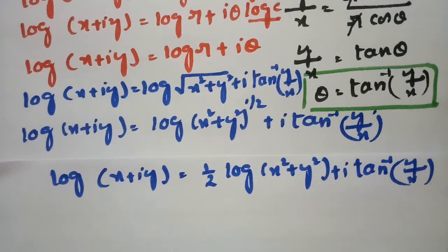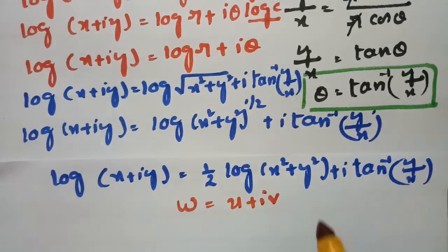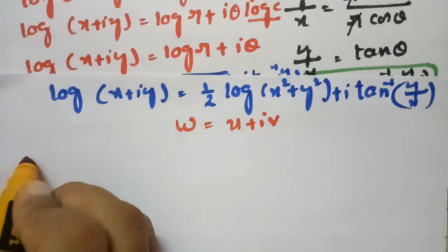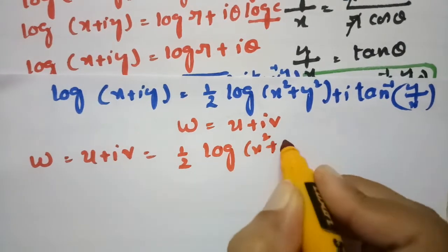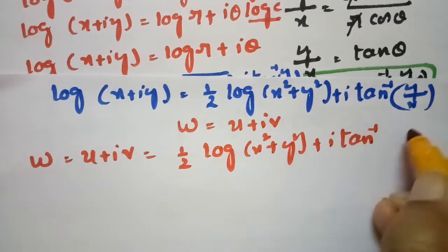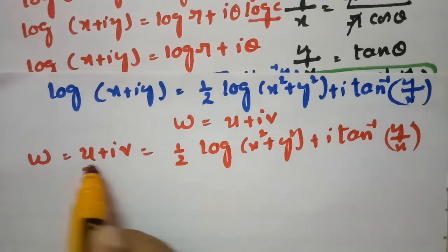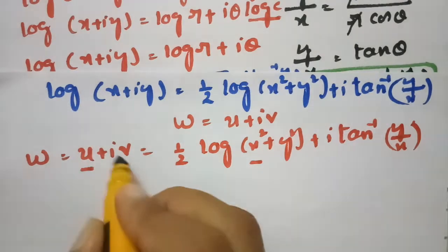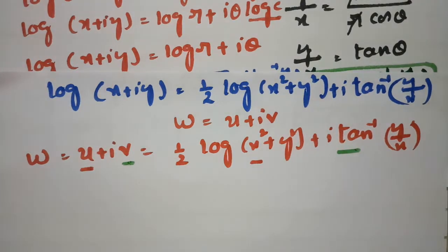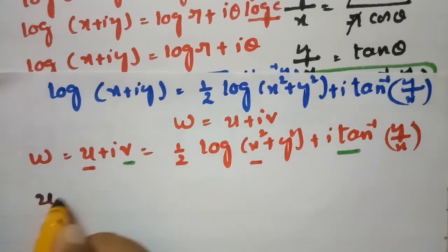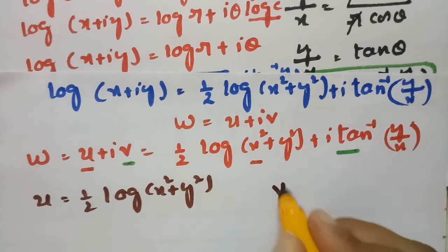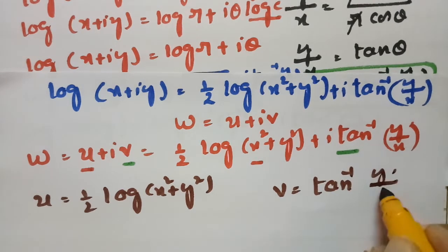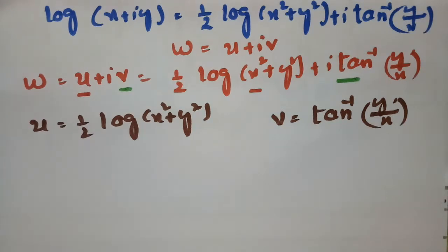We have w = u + iv, and comparing real and imaginary parts: u = (1/2)log(x² + y²) and v = tan⁻¹(y/x). Now to prove that CR equations are satisfied, we differentiate u with respect to x and y, and v with respect to x and y.